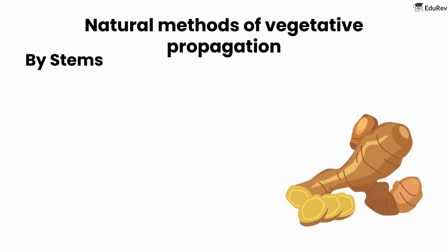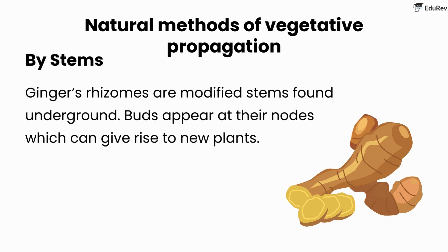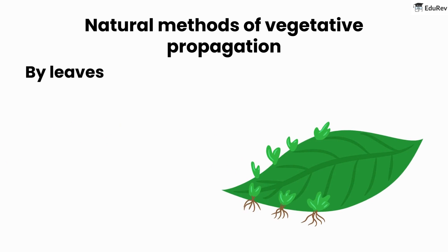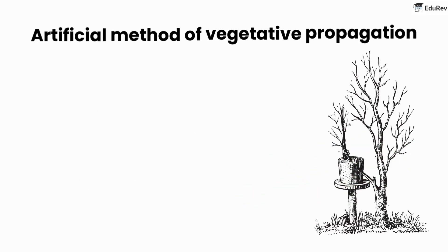By stems — underground stems: potato tubers, which are fleshy underground storage structures, have buds called eyes that grow into new plants under favorable conditions. Ginger's rhizomes are modified stems found underground, and buds appear at their nodes which can give rise to new plants. By leaves: buds are formed along leaf margins which later give rise to a new plant. An example is bryophyllum.